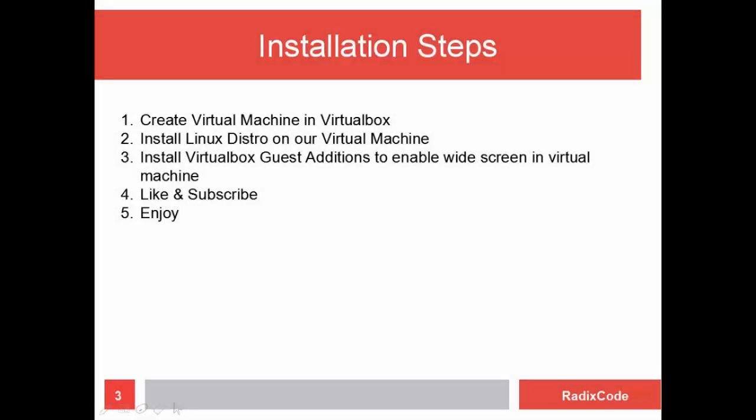Let's see what we are going to do in this video. First of all, we will create a virtual machine in VirtualBox. After that, we will install Linux in VirtualBox. And after installing Linux, we will install VirtualBox Guest Additions to enable widescreen for our Linux distribution.